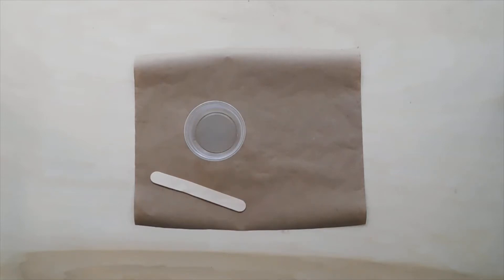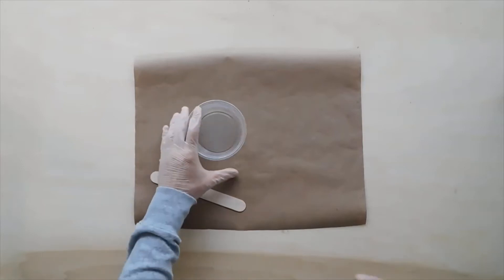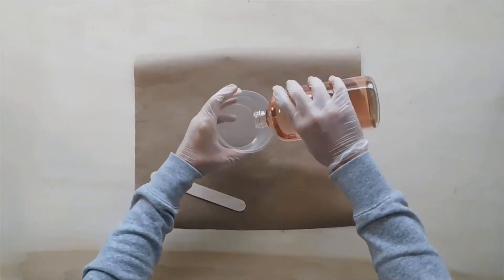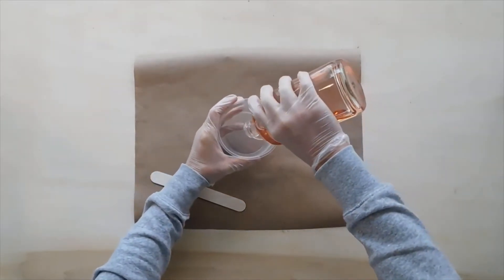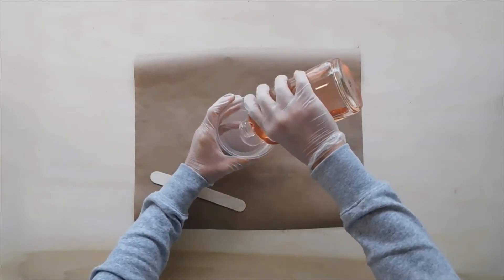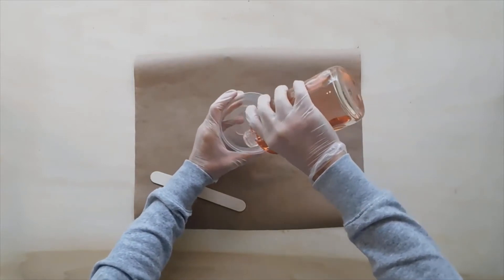Set up your clean working space, pour the spur into a cup or container. Thinning if required may be done using ethyl acetate, butyl acetate, MEK, MIBK, or other compatible solvents.